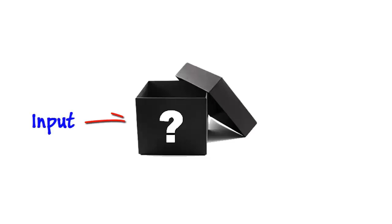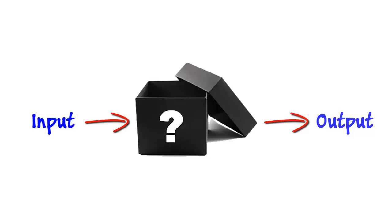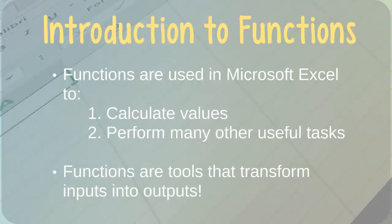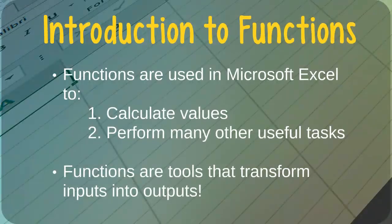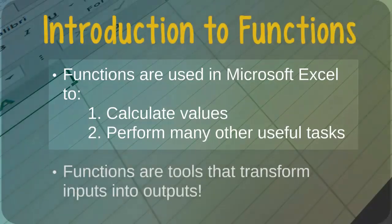Instead, it is enough for us to know that we supply the function with some input values, something magical happens inside the black box, after which the function provides us with an output value, which is the answer that we were seeking. Microsoft Excel provides us with literally hundreds of different functions that we can use to quickly calculate values or to perform many other useful tasks.